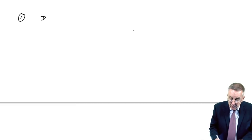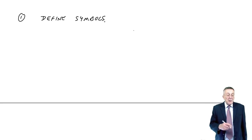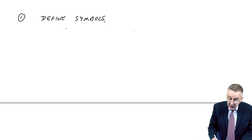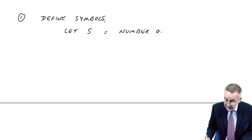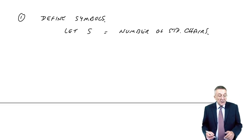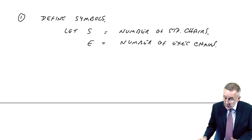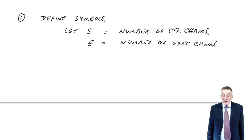The first step is to define our symbols. Because, as you'll see, we're going to set up some equations. What I mean by that is, what do we want to know? We want to know how many standard chairs we produce. So I'll let S equal the number of standard chairs. And also, how many executives we're going to produce. I'll let E equal the number of executive chairs.